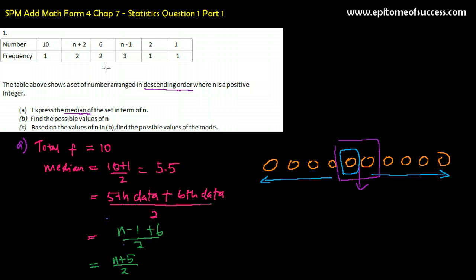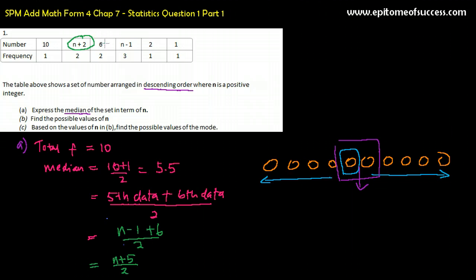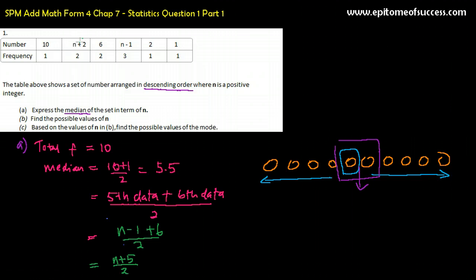N cannot simply be any number — it cannot be 10, 11, 15, 50, or 100. Because the data is currently in descending order, this data must be between 10 and 6. Since it is in descending order, this value here cannot be 20; it has to be between 10 and 6. Based on this condition, we can find the values of N.